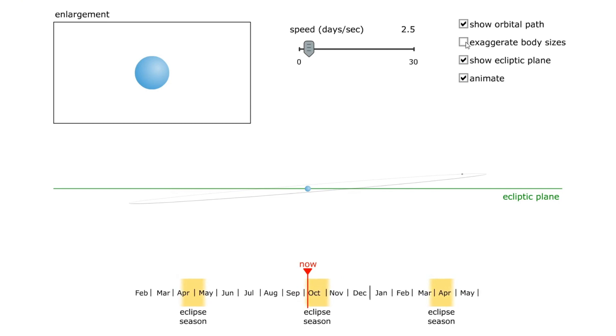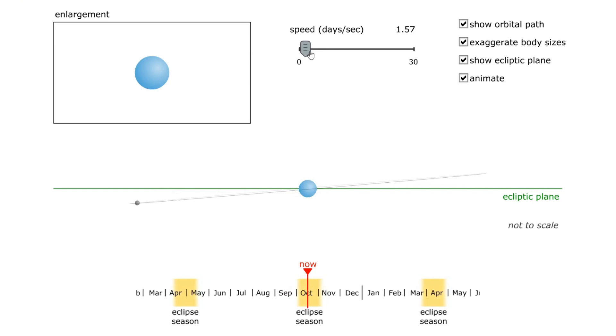However, as we enter an eclipse season, that will no longer be true. Let me exaggerate the size of the Moon and Earth and slow the animation rate. I have stopped the simulation as a solar eclipse occurs. Our perspective is looking from the Sun right along the line of nodes. This is the middle of an eclipse season.